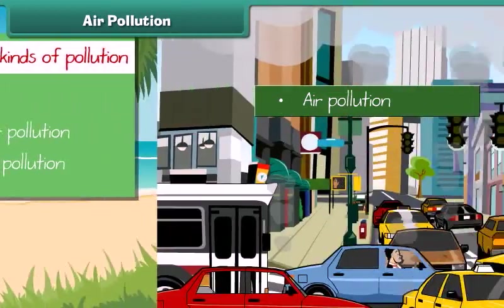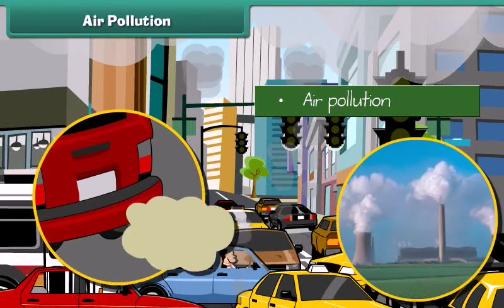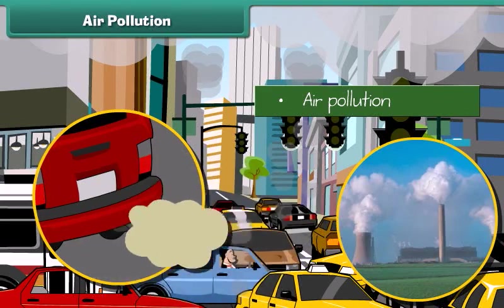Air gets polluted when unwanted substances — air pollutants — enter it. But the question is, how do these substances enter into the air? These air pollutants come due to burning of fuels and emission of poisonous gases from industries.